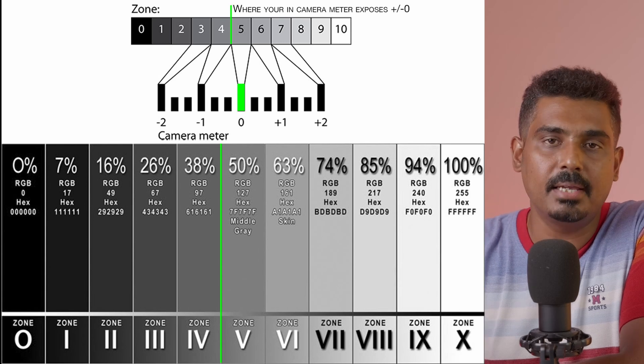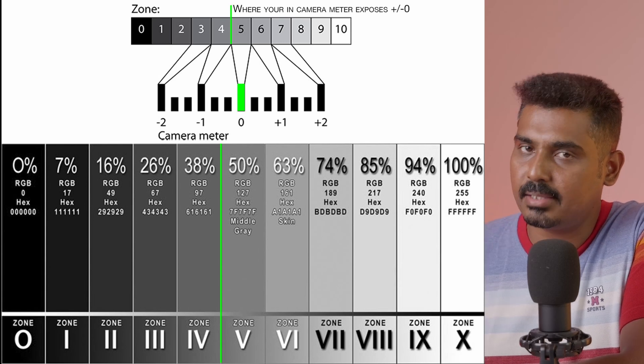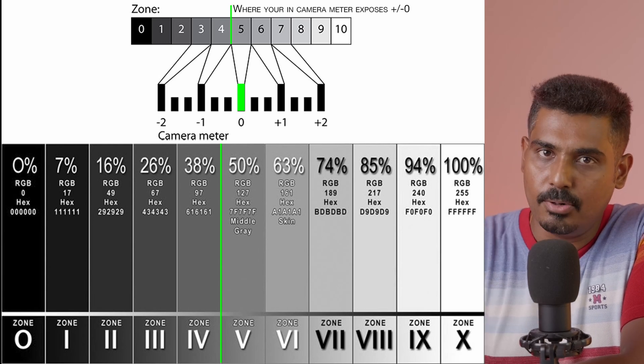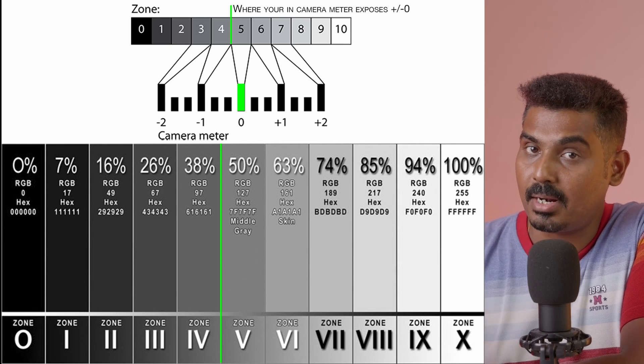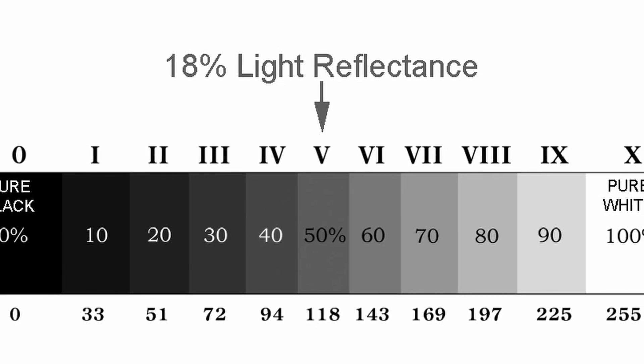A gray card reflects light uniformly — it can be black, dark, white, or bright depending on the subject. The camera reads this layer which reflects light. This is pure middle gray — 18% gray. If you have an 18% gray card, you can use it. The light reflects 18%, making it a middle gray, and that allows you to achieve a perfect exposure.